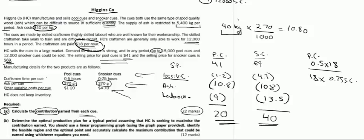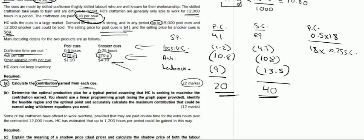The second part says: determine the optimal production plan for a typical period, assuming that the company is seeking to maximize the contribution earned. The company wants to know how many units of pool and snooker cue it should sell in order to maximize its contribution.